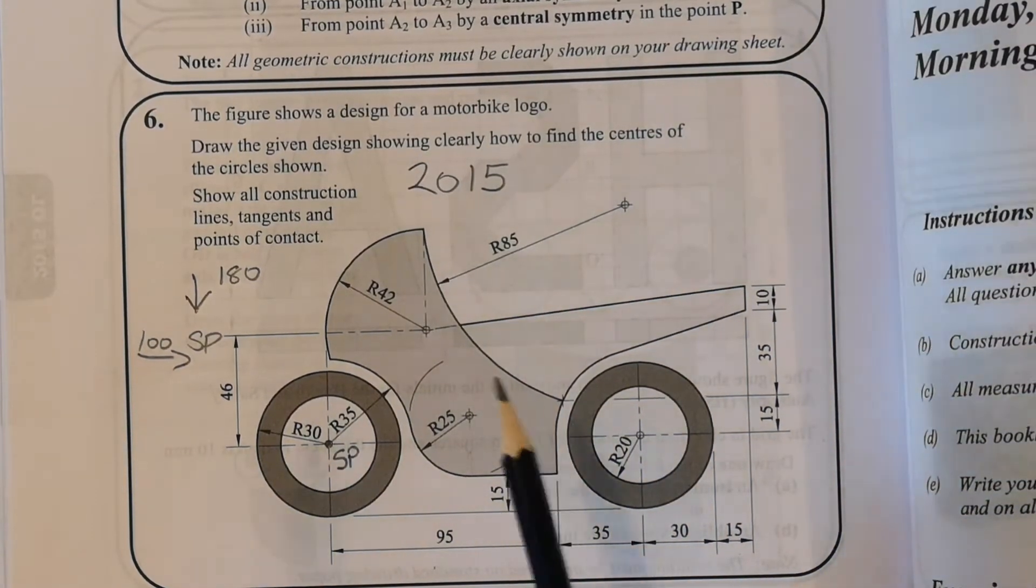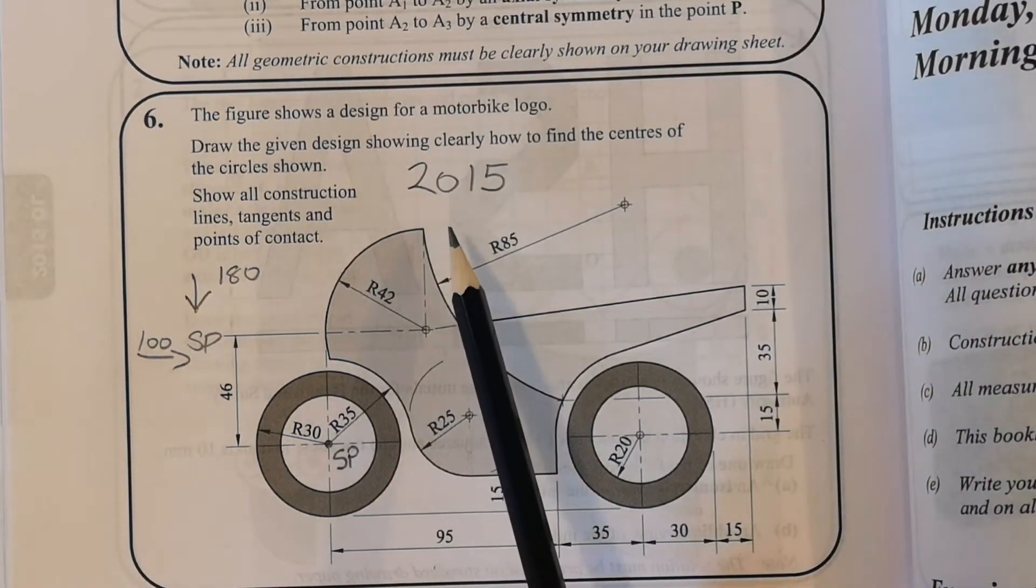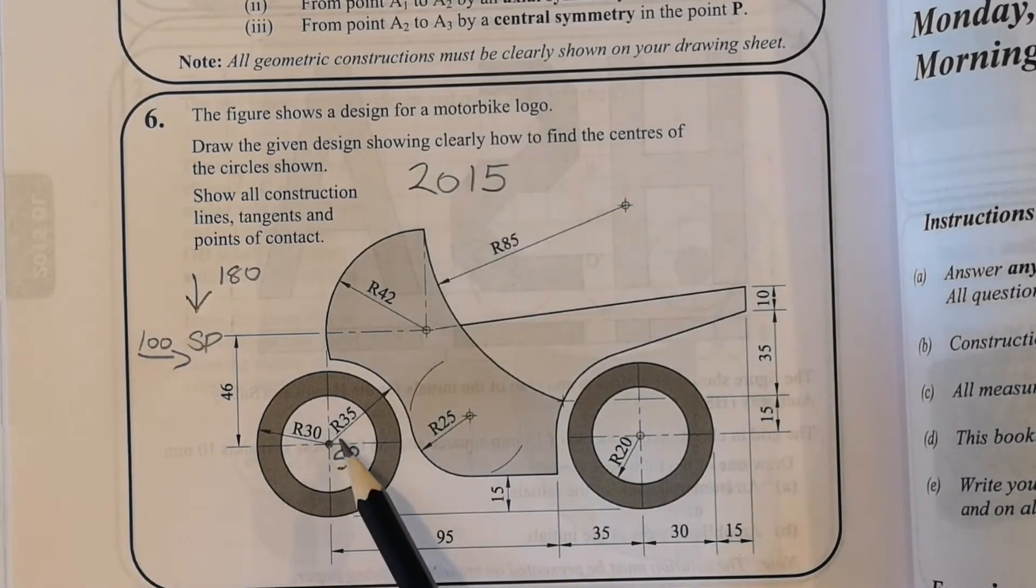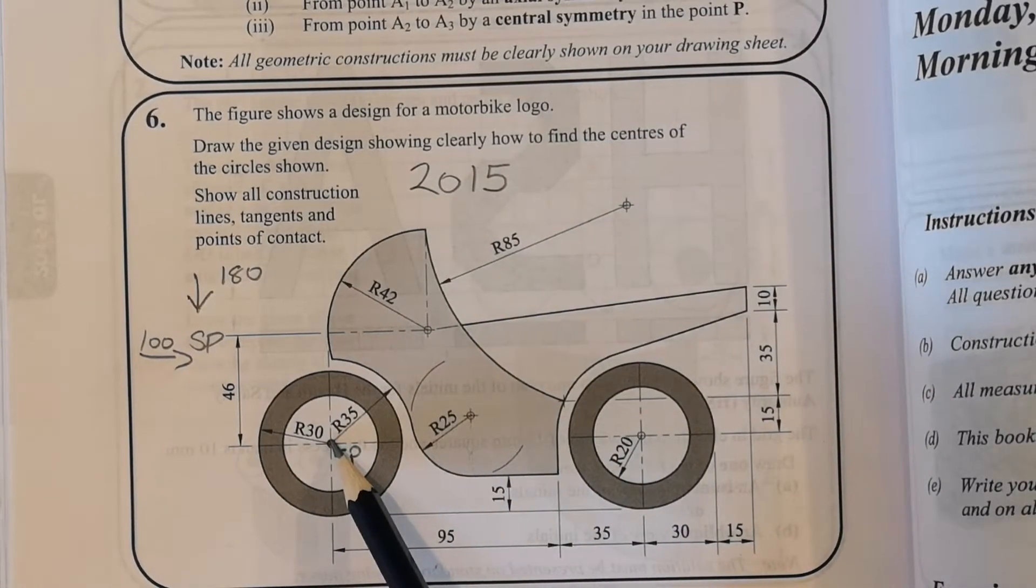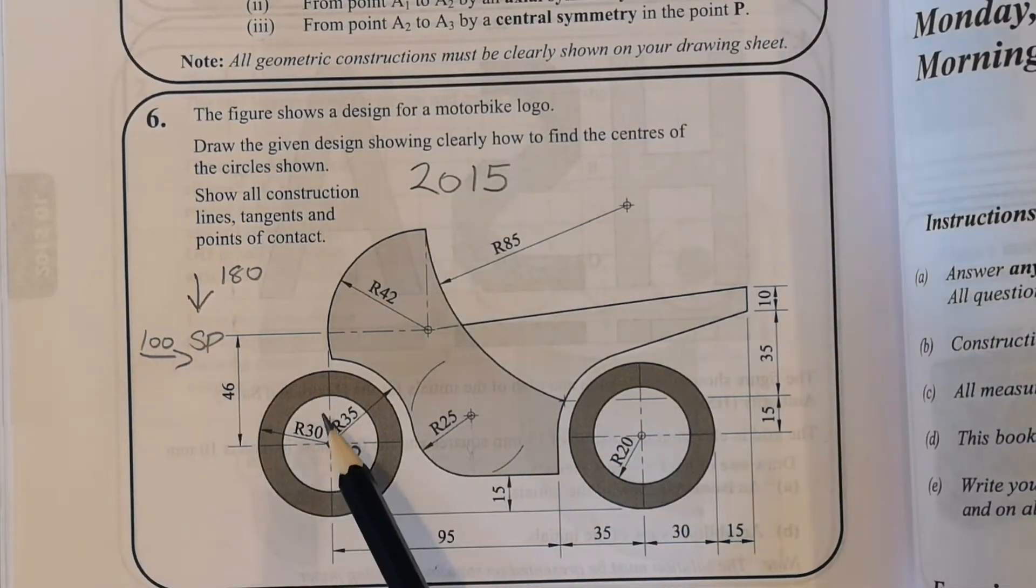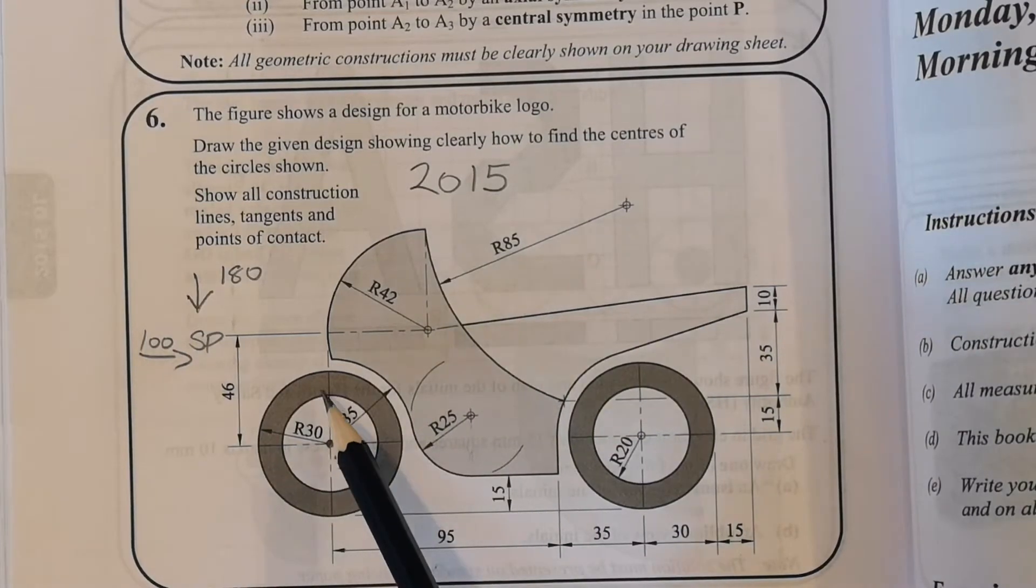Hi everyone, it's the 2015 ordinary level question number six. The first thing I want to do is get our starting point, which is the center of the front wheel of the motorbike. It's down 180, it's in 100 from the left.